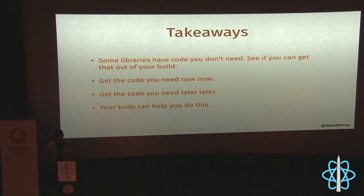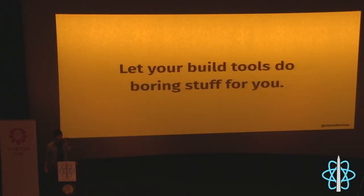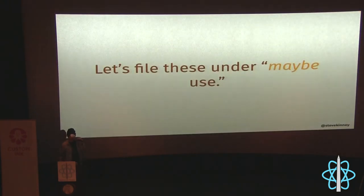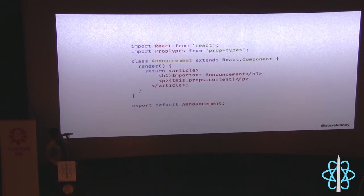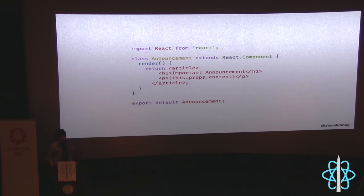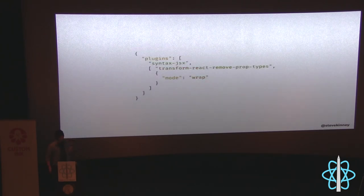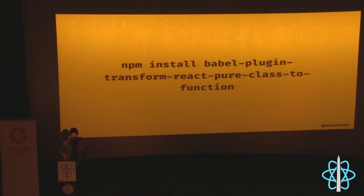With libraries like Lodash, you can do `import map from 'lodash/map'` and you won't import all of Lodash — not parsing that code is faster than parsing it. Final chapter: using build tools to do the hard work for you. Babel has some cool plugins — one removes all prop types from your production build, because not parsing that code is faster than parsing it. You can see the bundle size before and after.